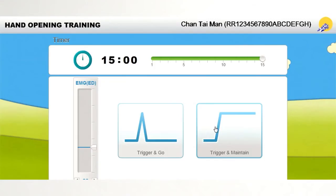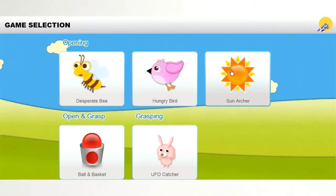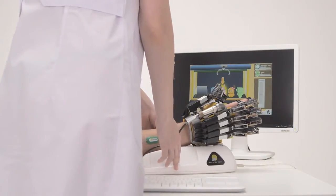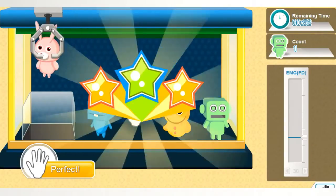Hand of Hope has passive and active training modes for hand opening and grasping. Five different games with four difficulty levels help the patient make the rehabilitation process more interesting and fun with audio and visual stimulation.